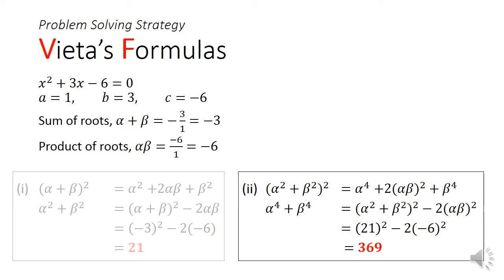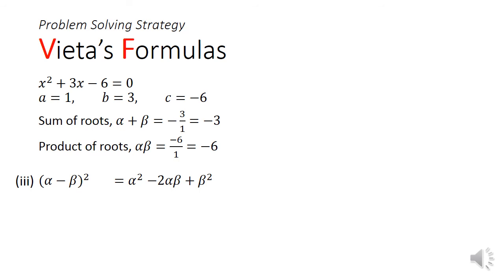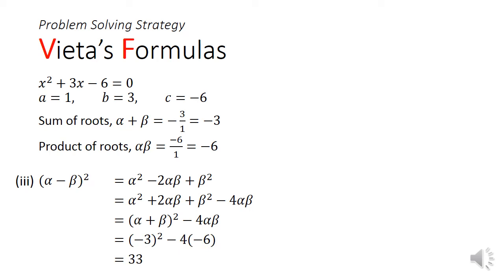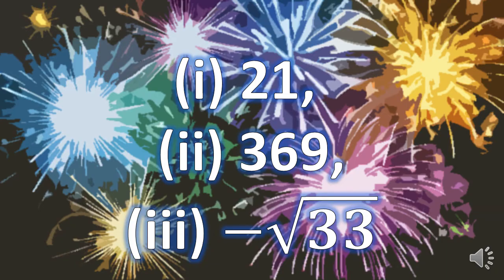In part 2, we consider the square of the sum of squares. Rearranging the equation, we get alpha to the 4th power plus beta to the 4th power equals alpha squared plus beta squared, whole thing squared, minus 2 times of alpha beta squared. Plugging in the numbers, we will get 369 as the final answer. In part 3, we consider alpha minus beta squared. This gives us alpha squared minus 2 alpha beta plus beta squared, which rearranges to alpha plus beta squared minus 4 times of alpha beta. Substituting the values, we get 33. When we square root both sides there will be a plus-minus; however, because alpha is less than beta, we reject the positive root and take the answer as negative square root of 33. So the answers are 21, 369, and negative square root of 33 respectively.